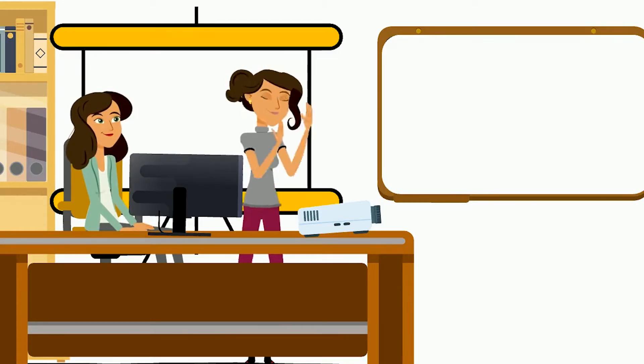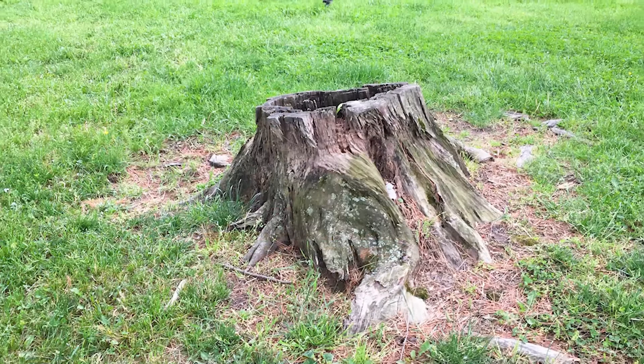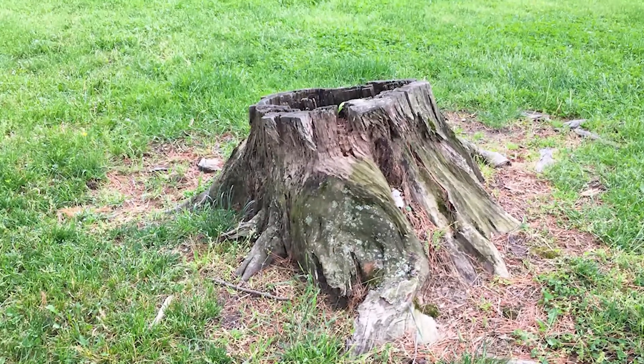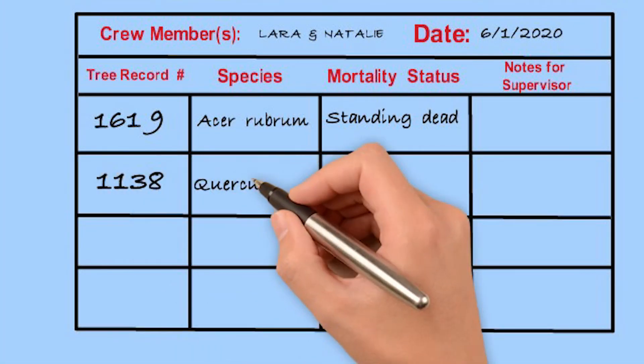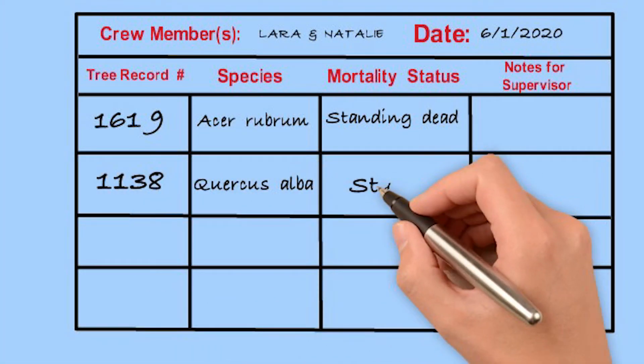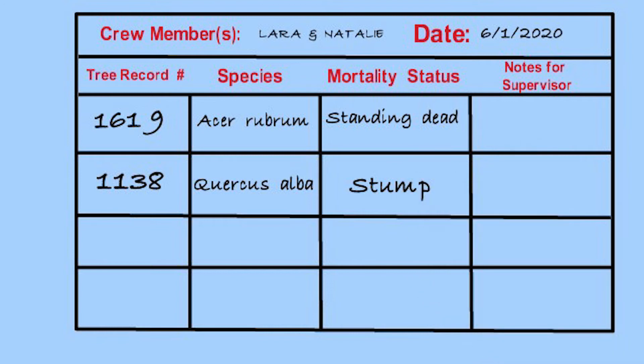This one seems easier — it's a stump. Correct, now you're getting it. Shorter than a foot tall, we call it a stump.